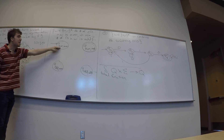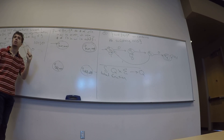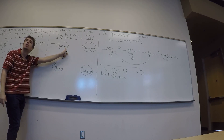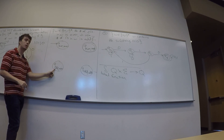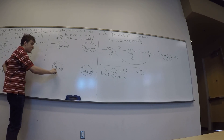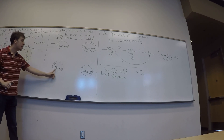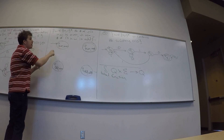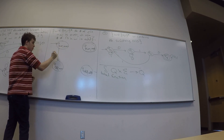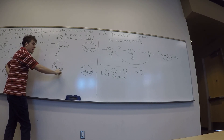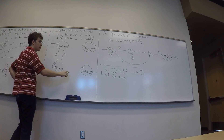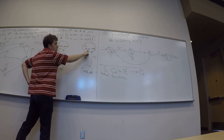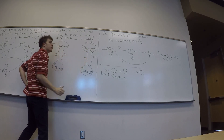Now the transitions. In (even, even), if I see a 0, the zero count parity flips but the one count stays the same — so I go to (odd, even). From (odd, even) on 0, I go to (even, even). From (odd, odd) on 0, I go to (even, odd). From (even, odd) on 0, I go to (odd, odd). When I receive a 0, I go to the state where the first coordinate changes and the second stays the same.